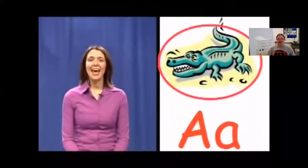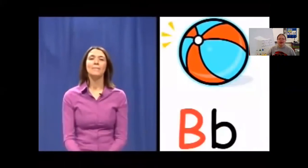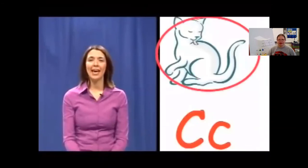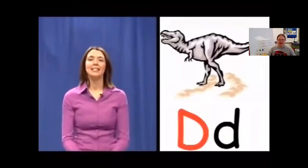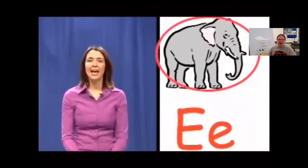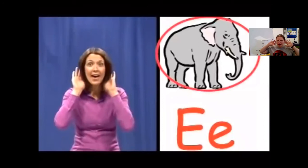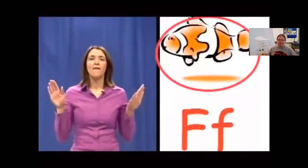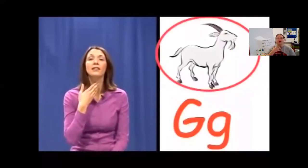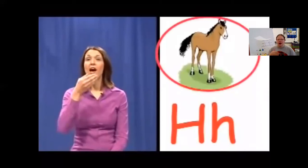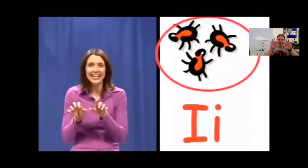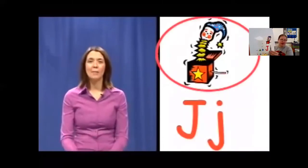A, A, alligator. B, B, ball. C, C, cat. D, D, dinosaur. E, E, elephant. Fish. G, G, goat. H, H, horse. I, I, insects. J, J, jack in the box.